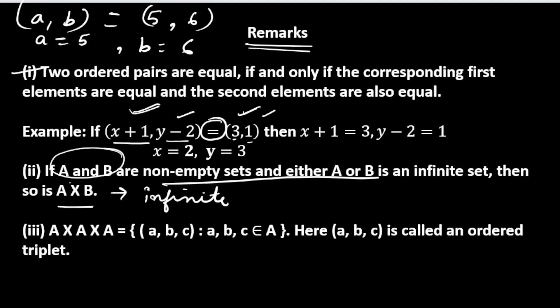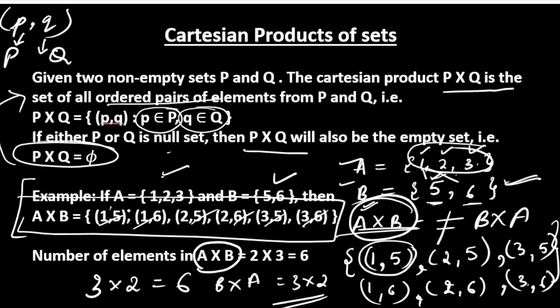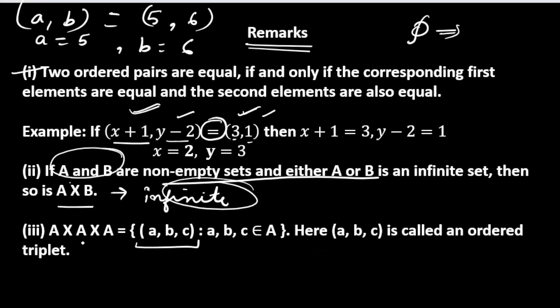If any of the sets is infinite, the Cartesian product will be infinite. We already know that if any set is empty, the Cartesian product will also be empty. Now, if we write A cross A cross A, this means we are taking the Cartesian product of three sets. For two sets we write elements as pairs, but for three sets the answer will be in the form of a triplet — and (a, b, c) is called an ordered triplet.